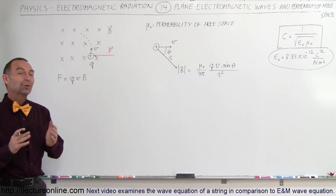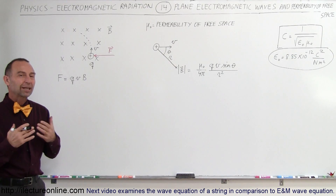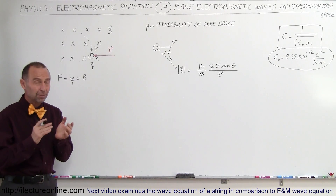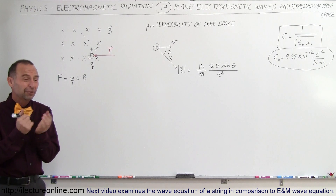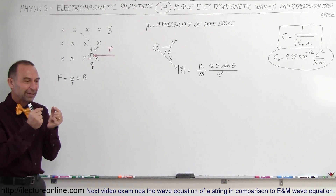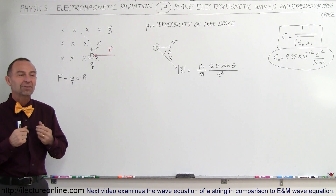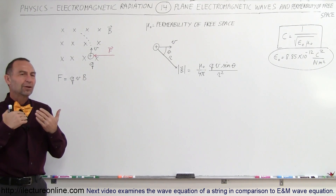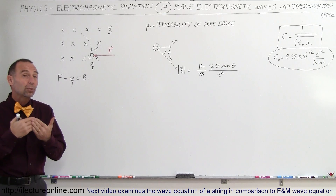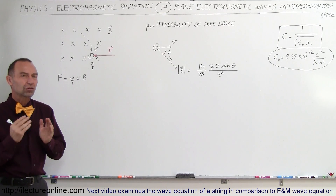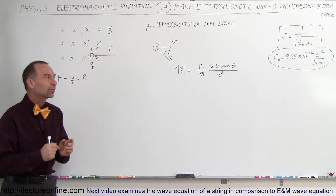Welcome to ElectronLine. Now we're going to take a closer look at the permeability of free space. Remember, the permeability of free space is what affects the magnetic field oscillations in space and what affects the speed at which electromagnetic radiation can travel through space.